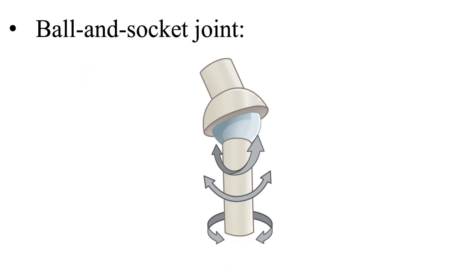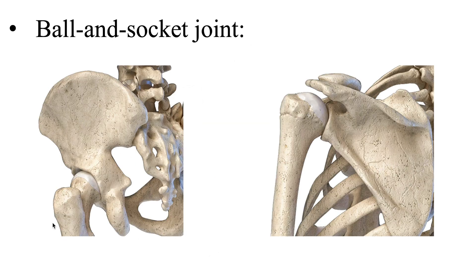The very first one is a ball-and-socket joint. This is a ball-like end of one bone that fits into a cup-like socket of another, allowing for movement in every plane. For example, we have the hip — known as the acetabular femoral joint — and the glenohumeral joint, which is the shoulder. These are considered ball-and-socket joints.